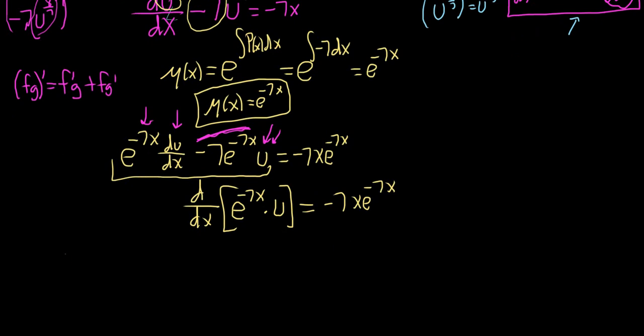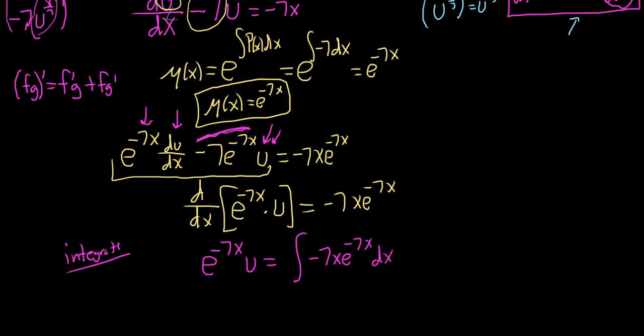The next step is to integrate both sides. The left-hand side is easy — the d/dx just goes away, giving e^(−7x)·u. For the right-hand side we integrate −7x·e^(−7x), and we'll use tabular integration, which works whenever repeated differentiation of one factor eventually reaches zero — as happens with −7x.